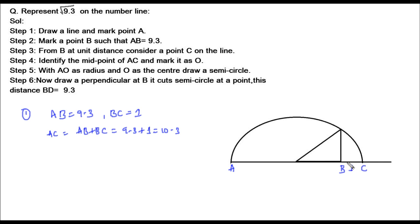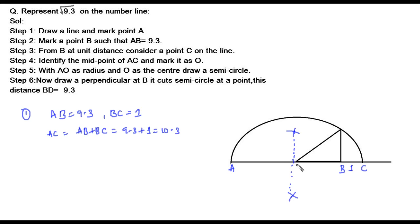Now let's identify the midpoint of AC. To find the midpoint, we take more than half the length as radius and draw arcs with A as center and with C as center on both sides. The intersection of these two arcs indicates the midpoint. Joining the two intersection points, the point where this line crosses AC is the midpoint O.